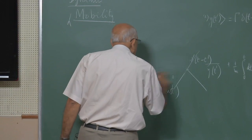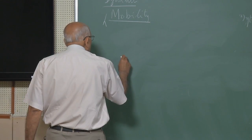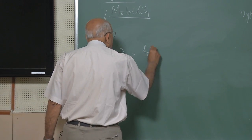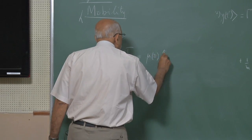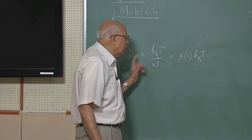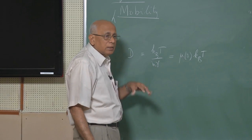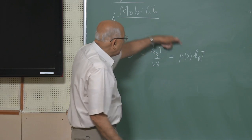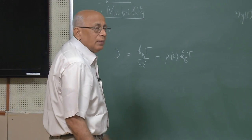We know that the diffusion constant D = k_B T / (M*gamma), which is directly connected to the static mobility by D = mu * k_B T. As you would have guessed, this relation between D and the static mobility is not specific to the Langevin model — it should be more general, and we will see why in a moment.